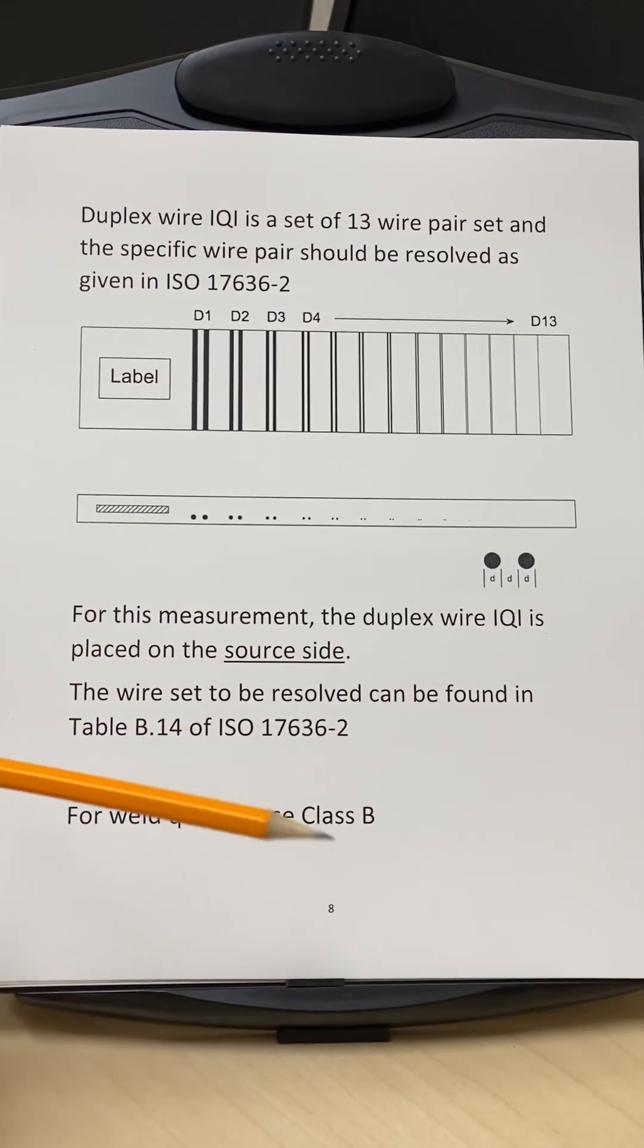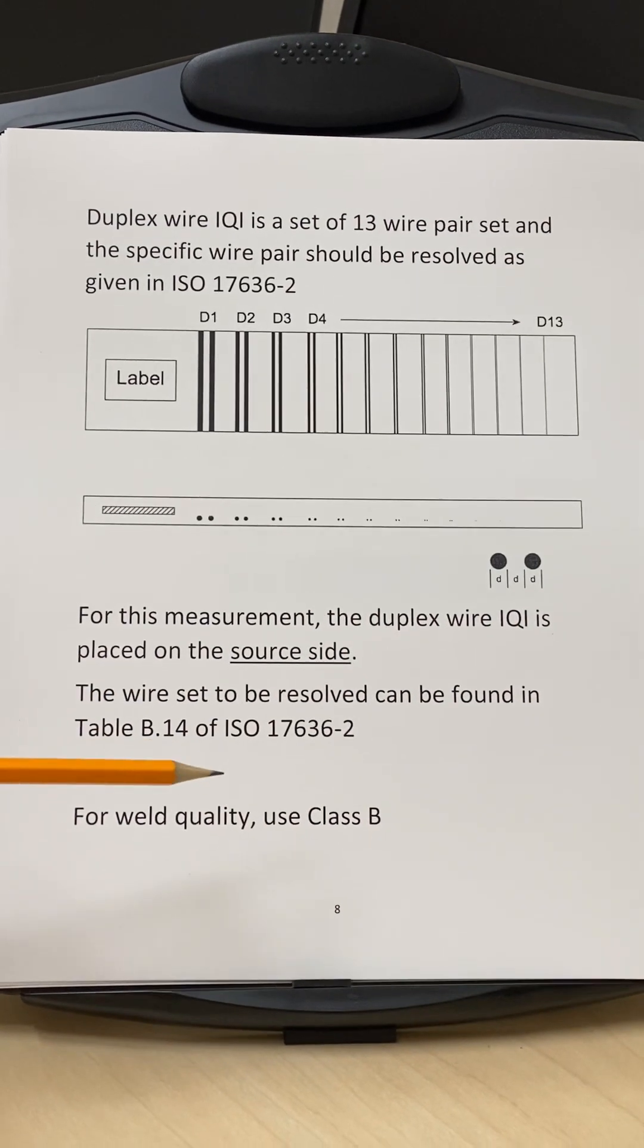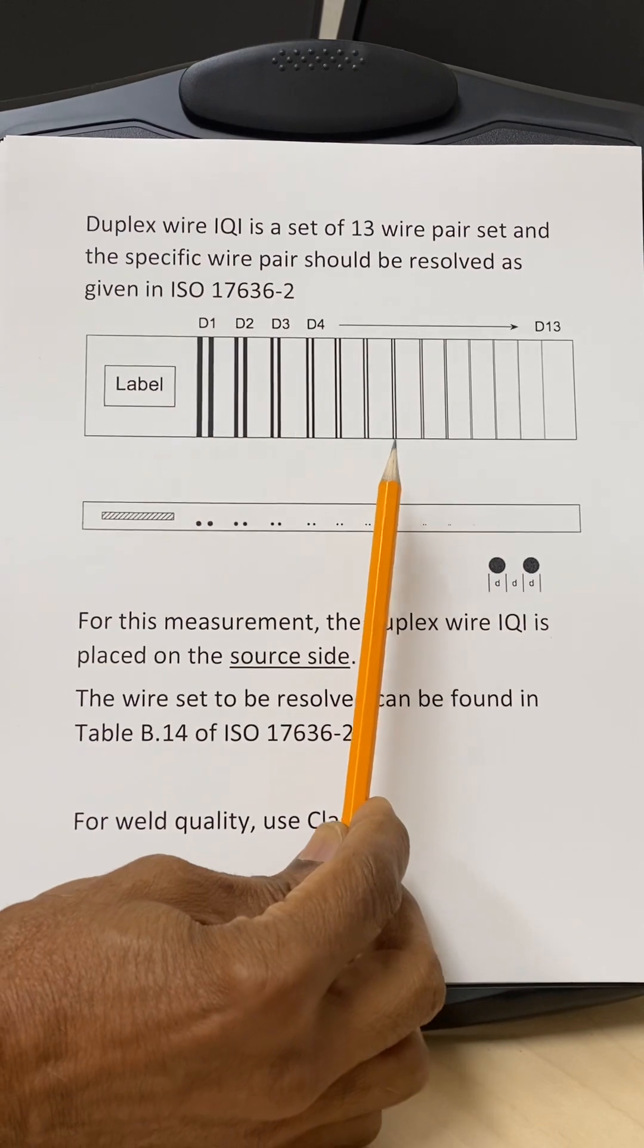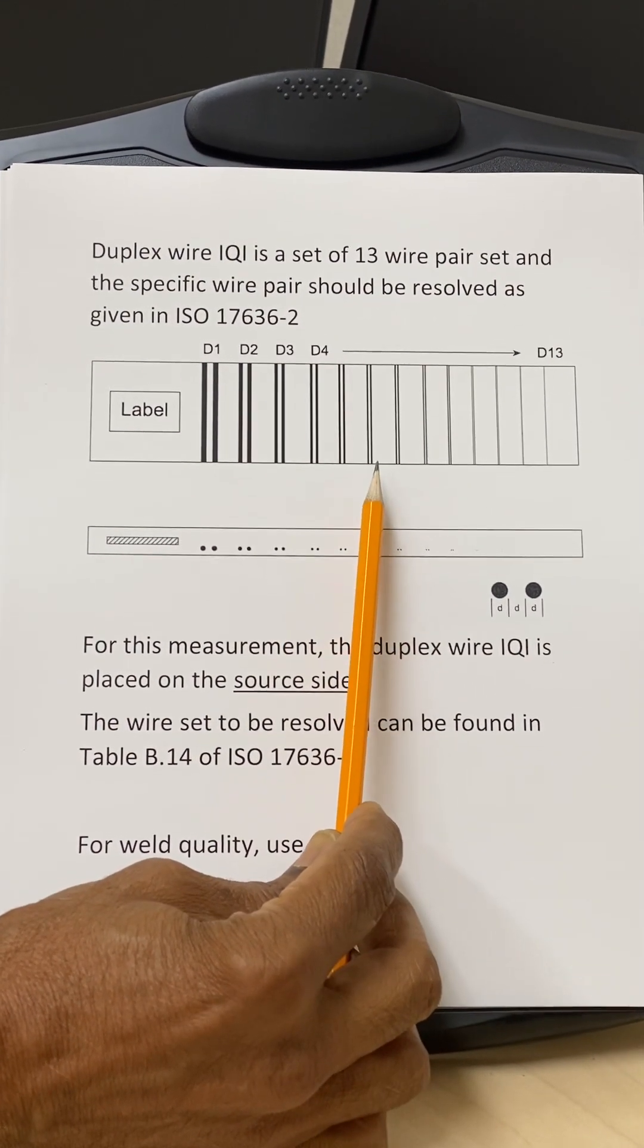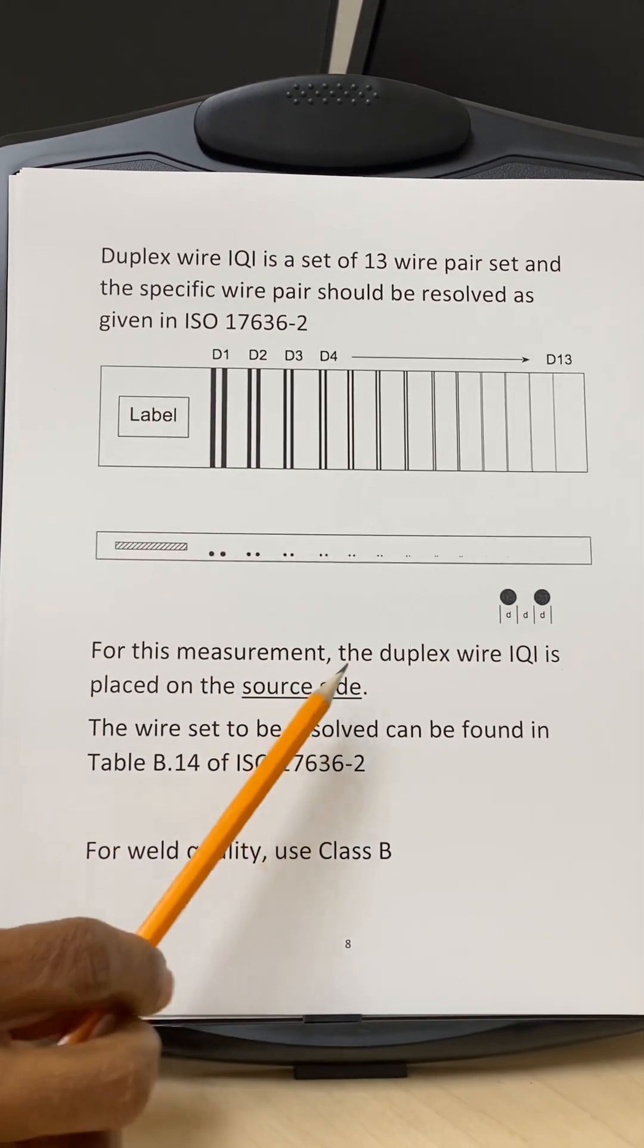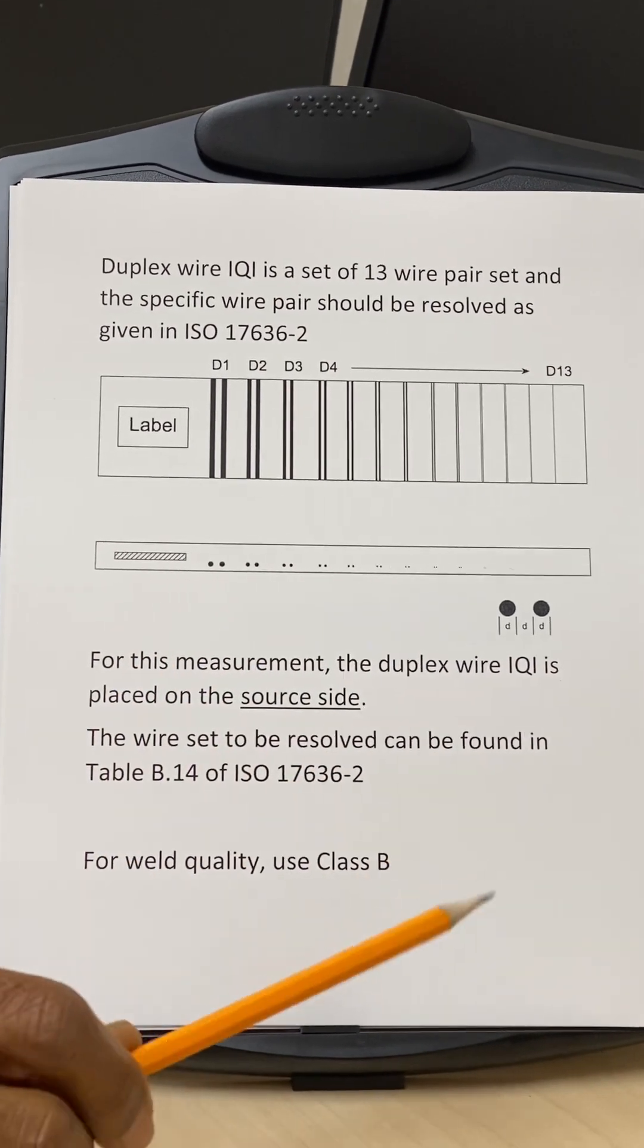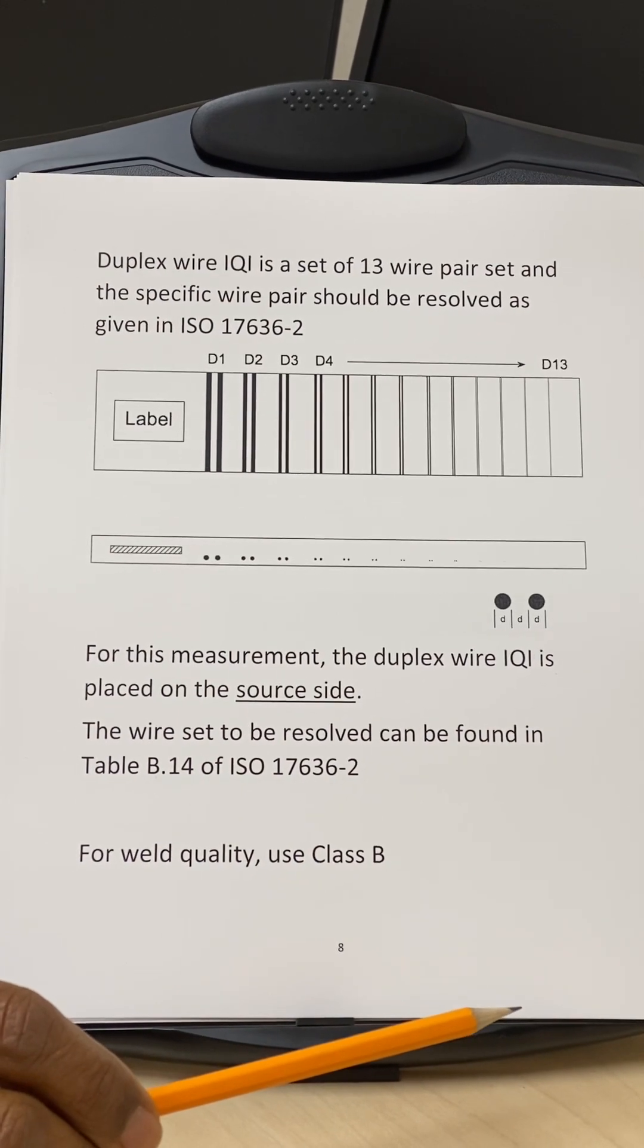So to really determine the spatial resolution of the image, we have to resolve the wire pair, which is actually required in the ISO standard. So in this standard, we will be able to find what wire pair needs to be resolved to get an acceptable radiograph with digital radiography.